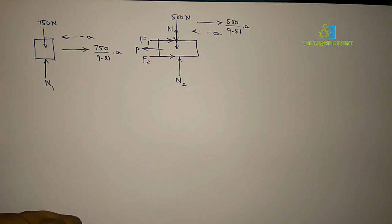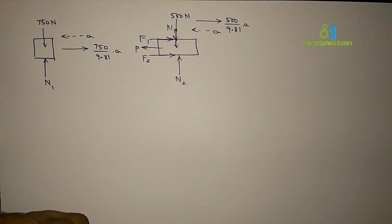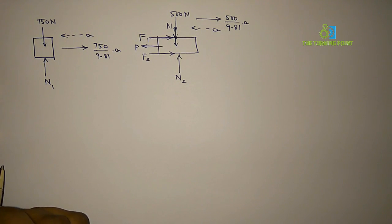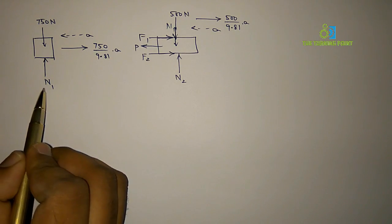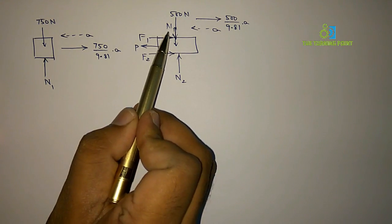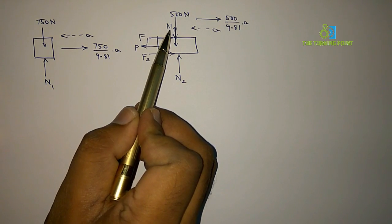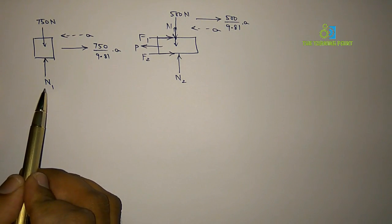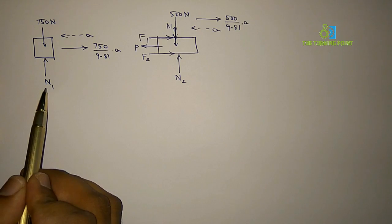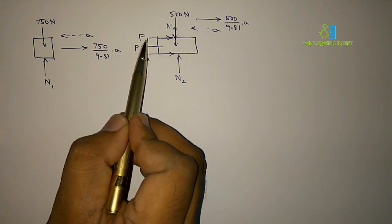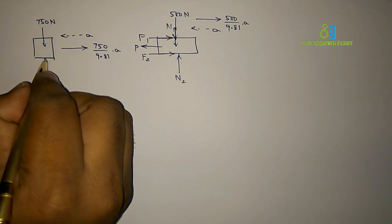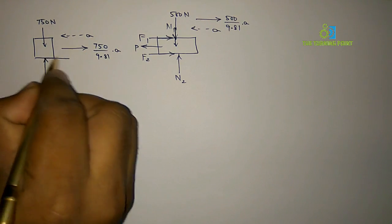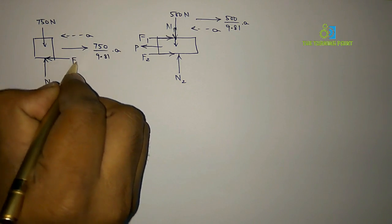For every action there is an equal and opposite reaction — that is Newton's third law. So comparing: for N1 existing on the crate, there will be an equal, opposite, and collinear force on the cart. Likewise, for the frictional force on the crate, there will be an equal frictional force generated in the opposite direction on the cart.